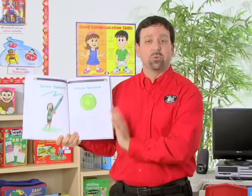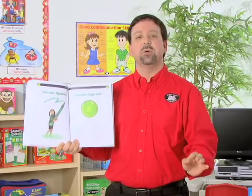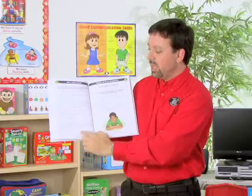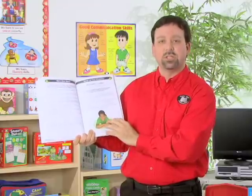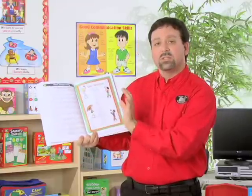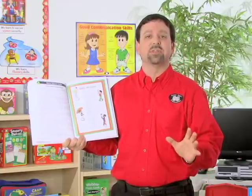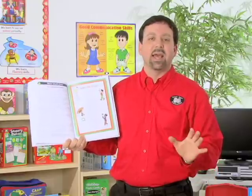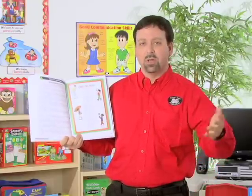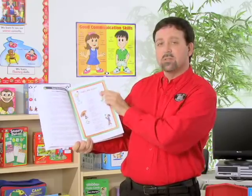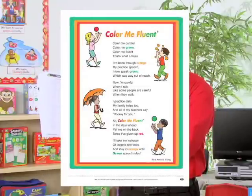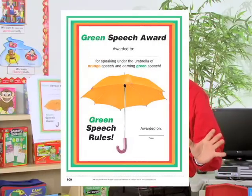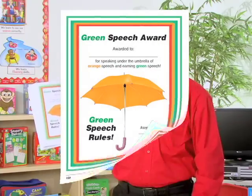Now we've made it up to the green level of speech for our program. Green level indicates fluent speech production. This section includes common terms associated with fluent speech as well as tips for encouraging more fluent speech behavior. Once the student has attained a successful level of fluent speech, we provide tips on how to maintain that fluency and keep all learned strategies in mind. We also have a Color Me Fluent poem for reinforcement and a green speech award to show that their progress has been successful.